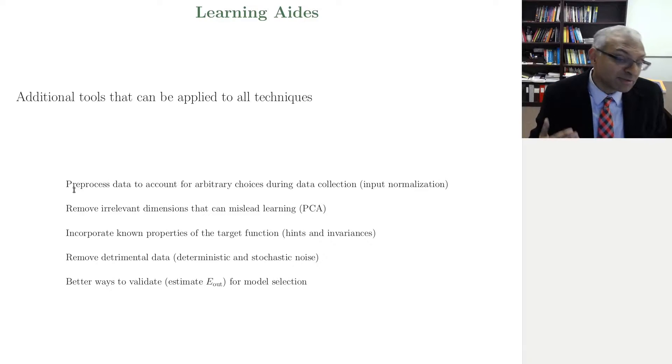Then we'll move on to a famous technique called principal component analysis. This can help in two ways. First, it can reduce dimension. And we know that lower dimension is better. For example, the VC dimension of linear model is related to the dimension of the space. The second way which PCA can help is it can identify which dimensions are irrelevant and identify which dimensions are important. The irrelevant dimensions mislead learning and that's what leads to overfitting. If you can throw away irrelevant dimensions, that's a huge bonus and a huge help to the learning.